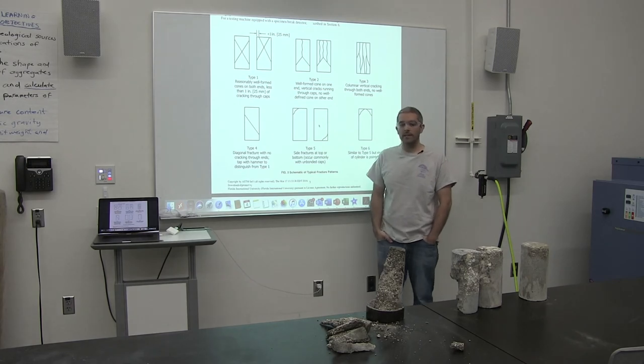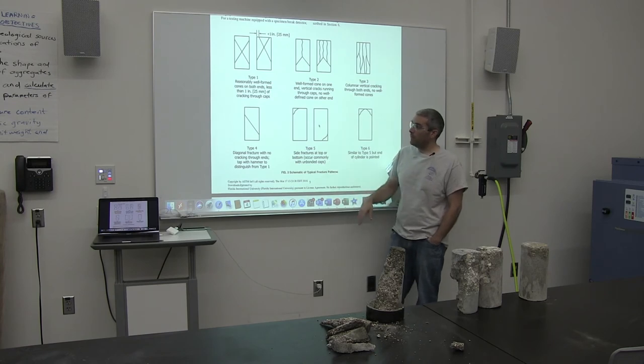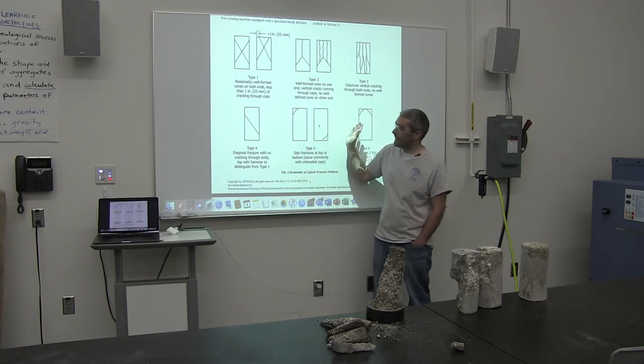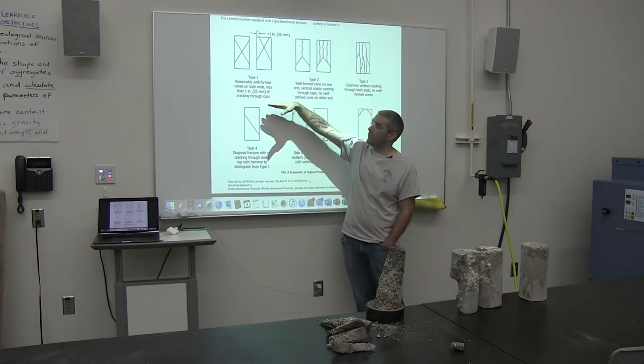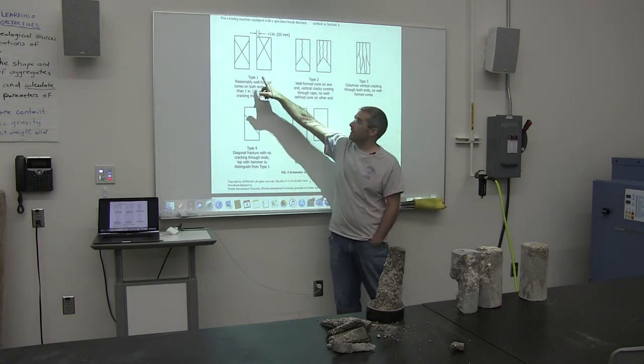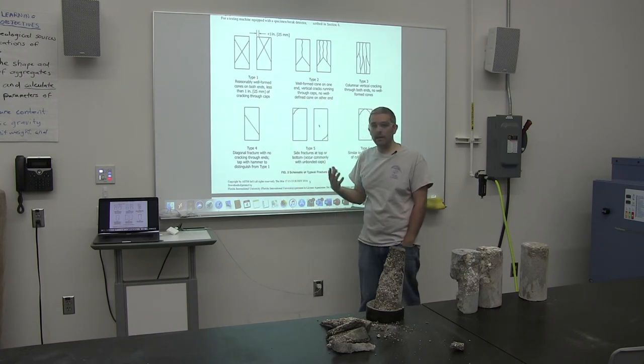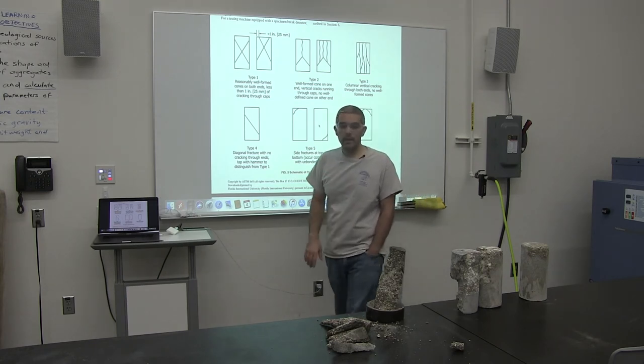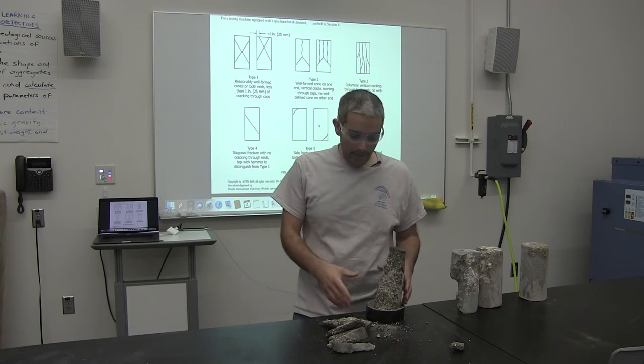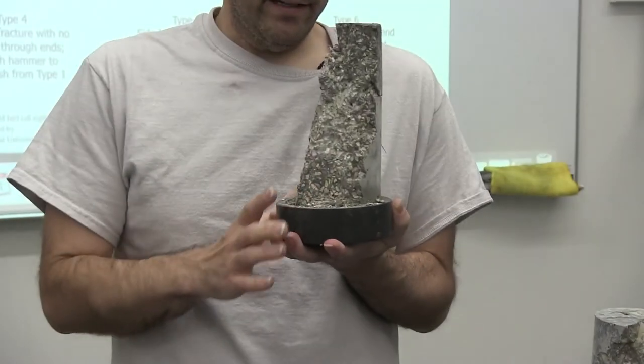Now the last thing to do is to take a look at the results from the test. If we look at ASTM C39 they indicate that there's six different types of failure, so we want to look at the failure pattern for our particular cylinder. The ideal failure pattern is type one, which we call like the double cone failure, and then we have the other ones which you can read about in the specification.